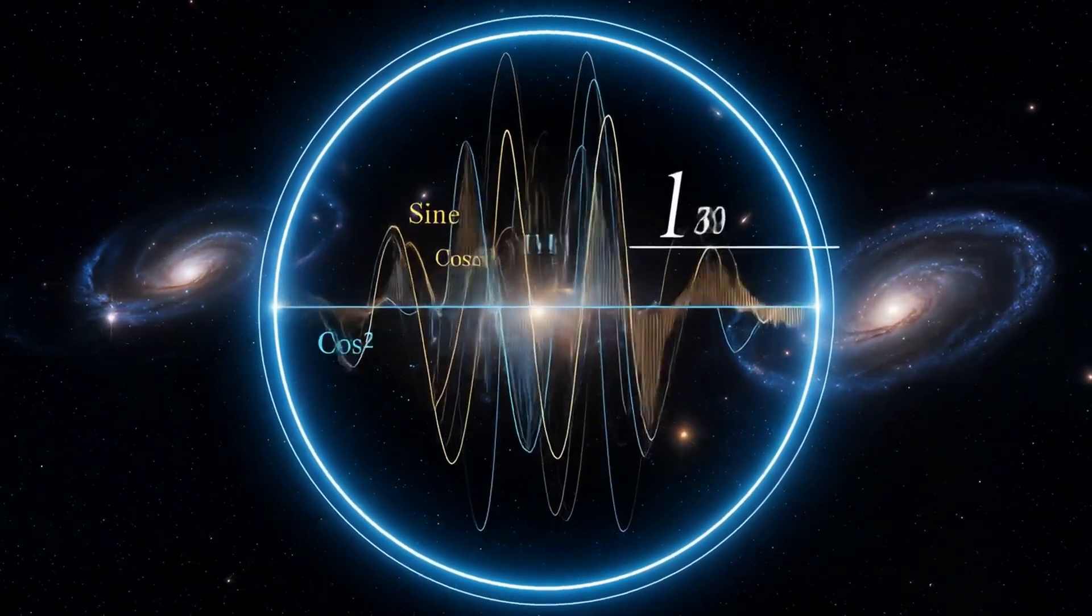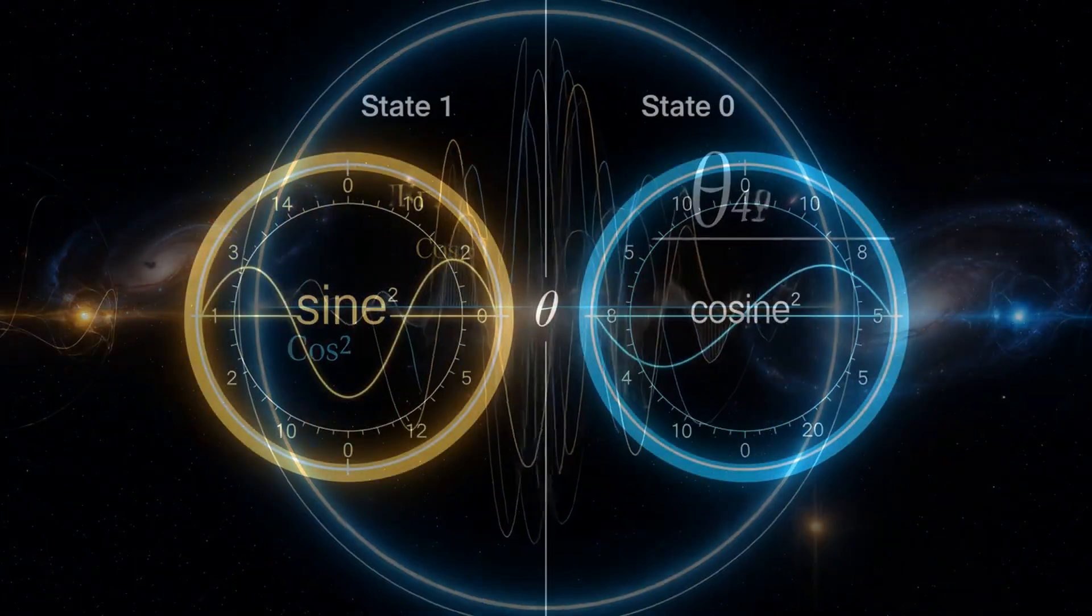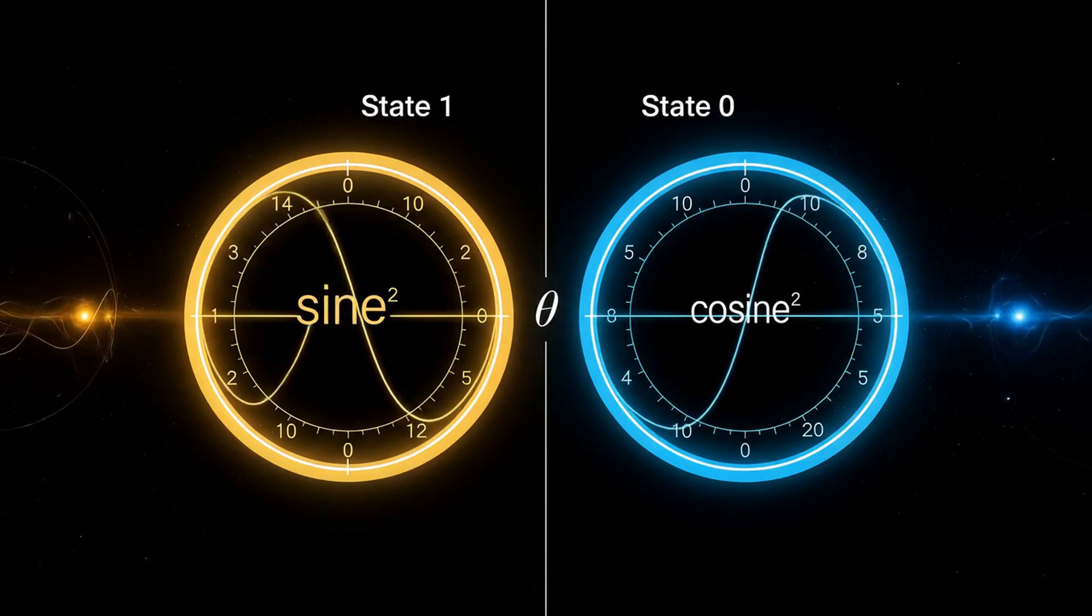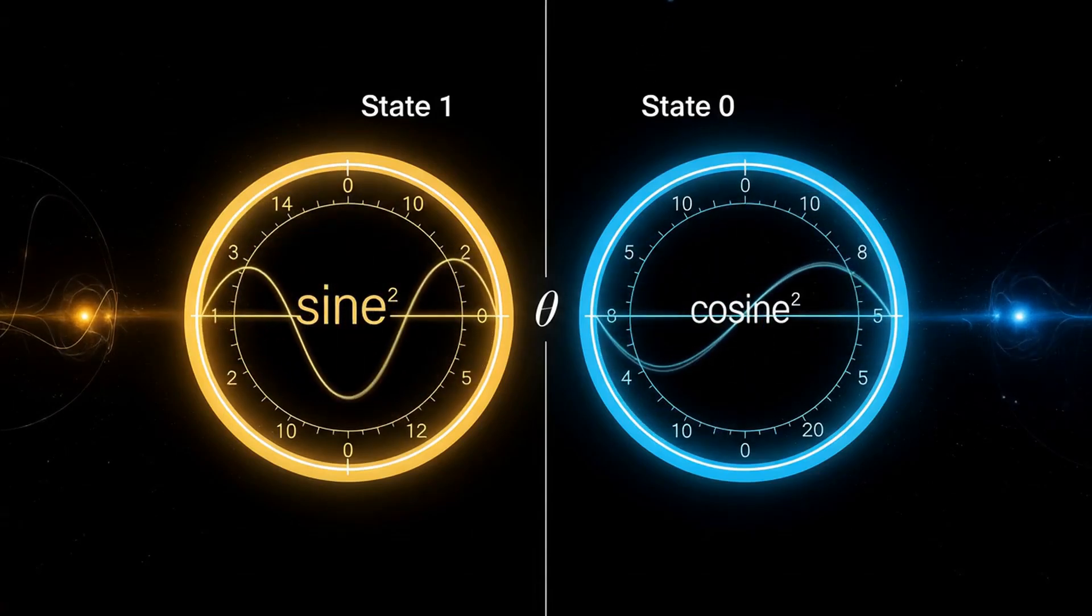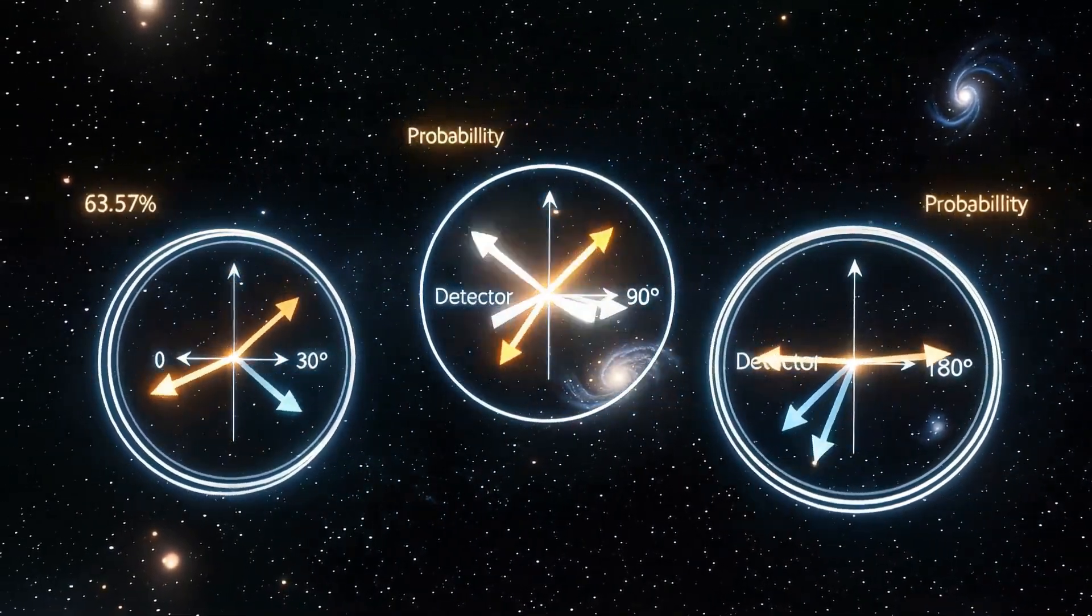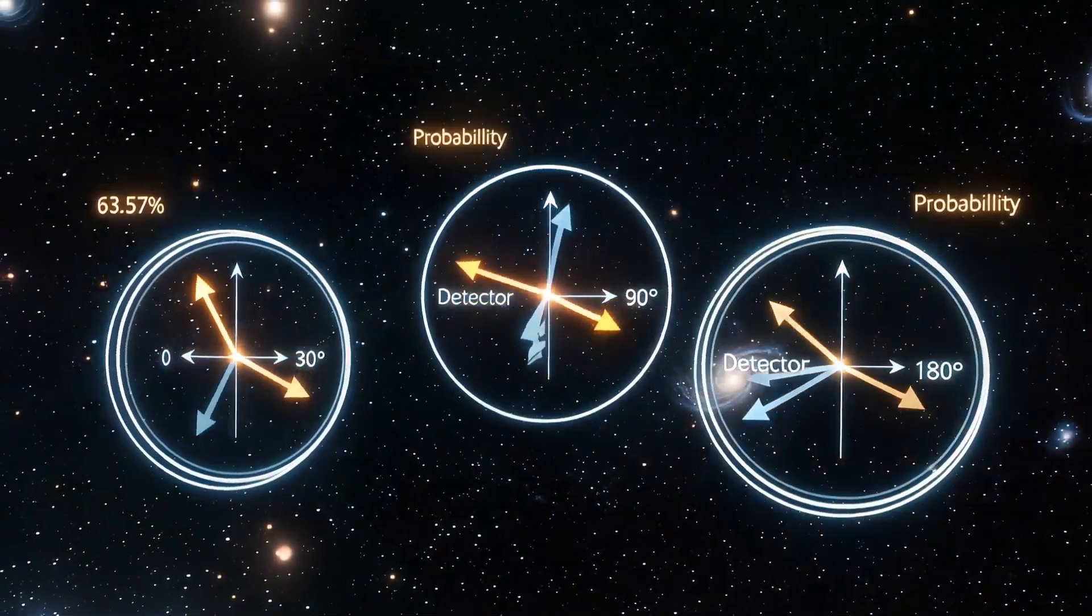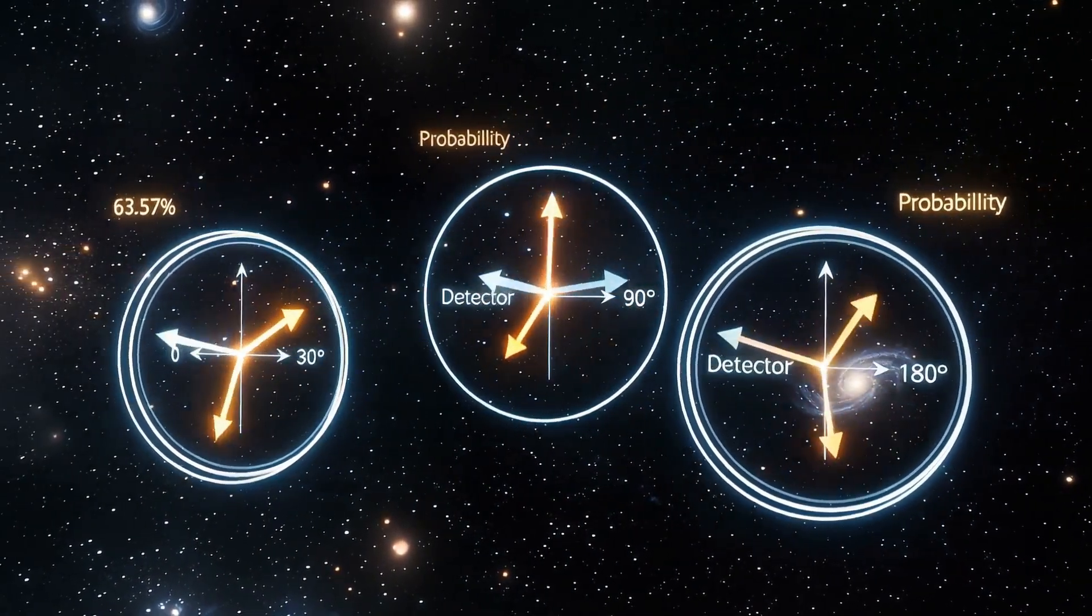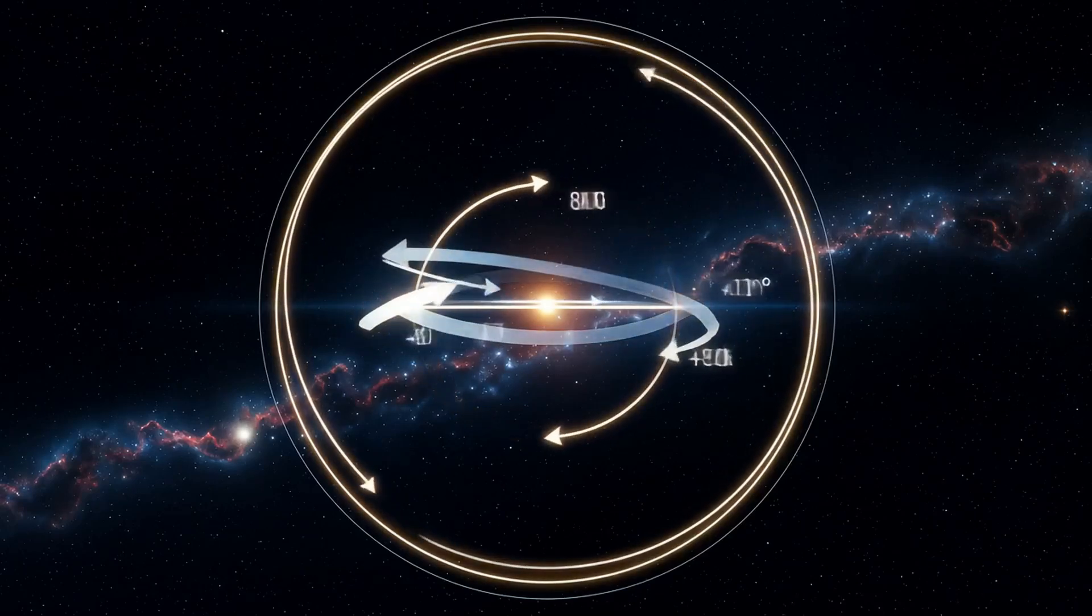The chance you see a one is the sine squared of half that angle. The chance you see a zero is the cosine squared of half that angle. If the quantum state vector points directly at the detector, you get certainty. If it is sideways, at 90 degrees, you get pure randomness. If it is opposite, the answer flips.